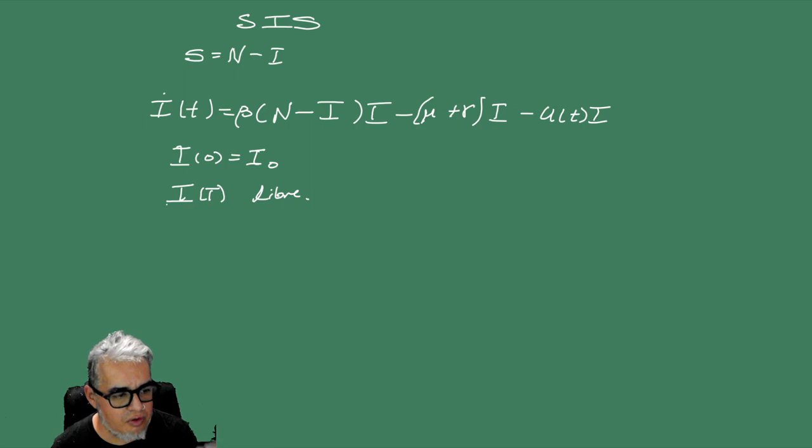Entonces, de alguna forma, esta U que representa la tasa de tratamiento pues la podemos pensar como una recuperación extra. Es una tasa adicionada de recuperación generalizada, si quieren.